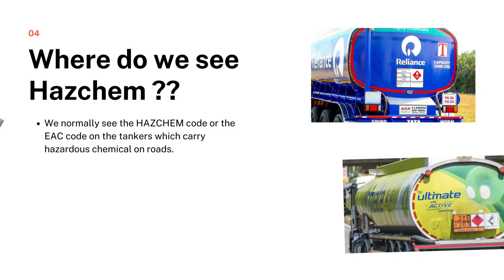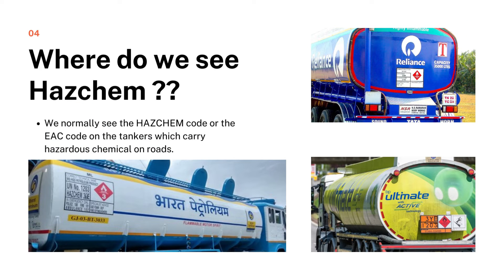We normally see the HAZCHEM code or EAC code on the tankers which carry hazardous chemicals on the roads. We always notice this HAZCHEM code in our daily lives — there are a lot of tankers moving on the roads — but we never pay attention to the details of the letters shown on the labels. After watching this whole video, you will definitely pay attention to it and perfectly know what these codes describe.